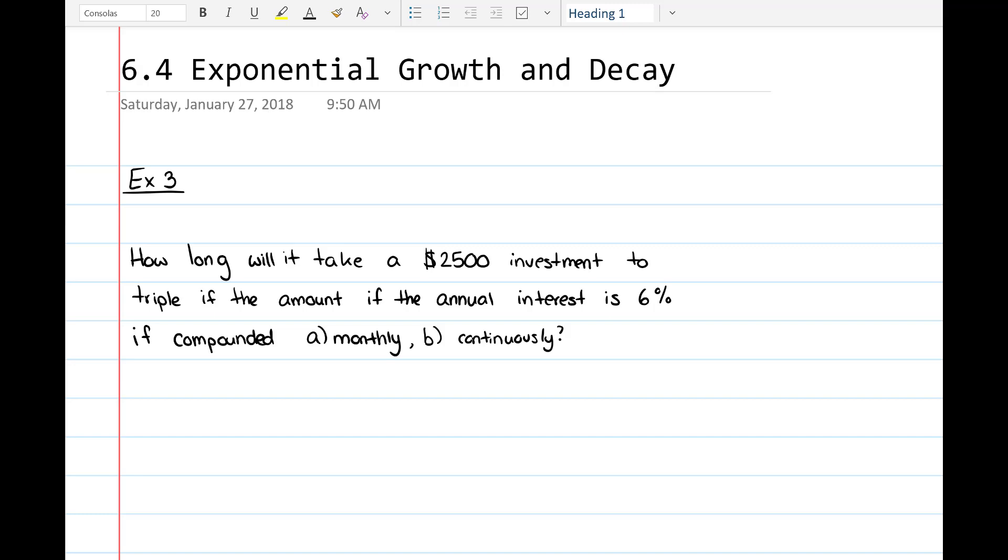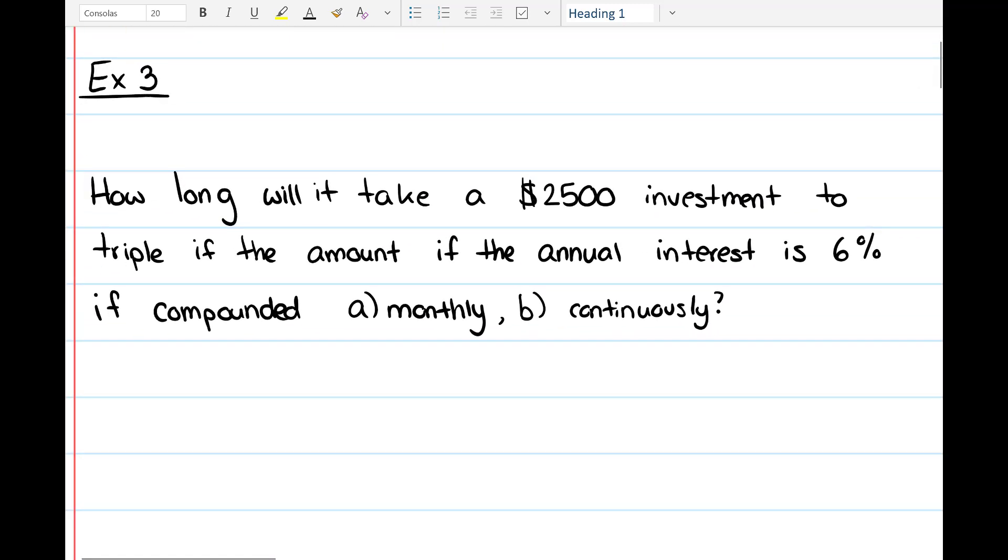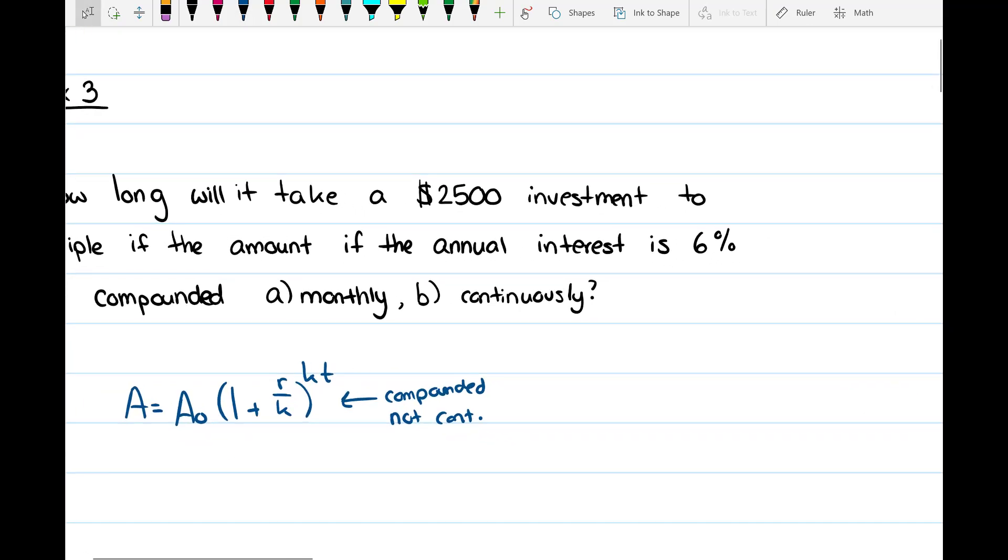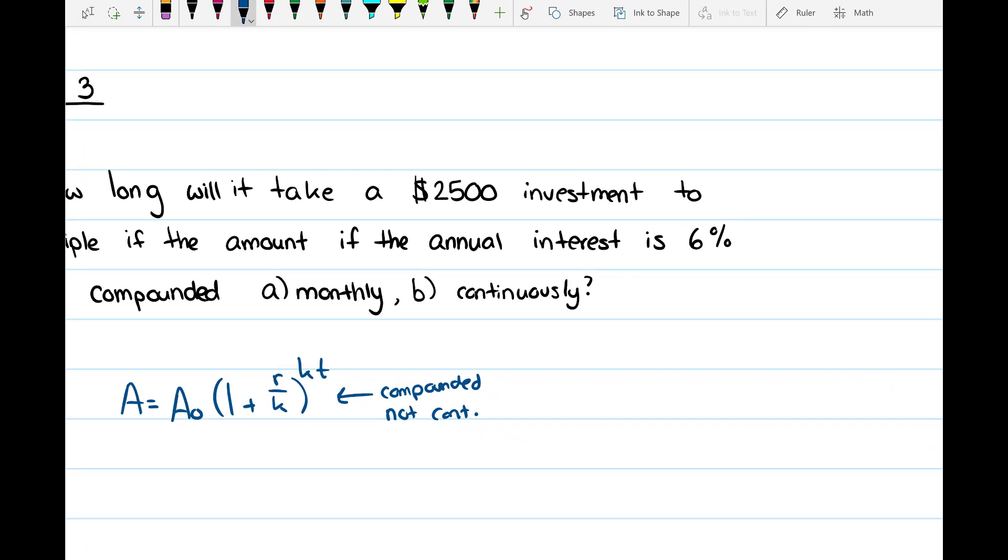So first of all, let's write down our formula for compound interest. If you're going to compound anything that's not continuous, you're gonna use this formula. This is compounded not continuously.